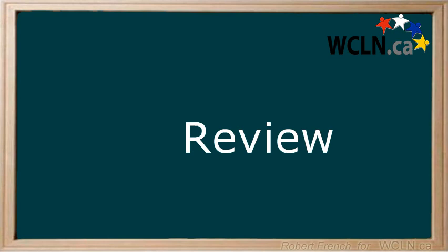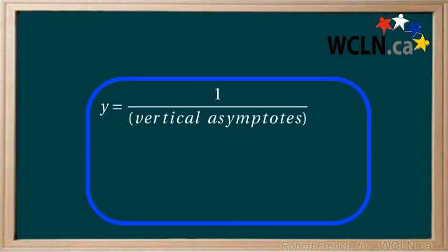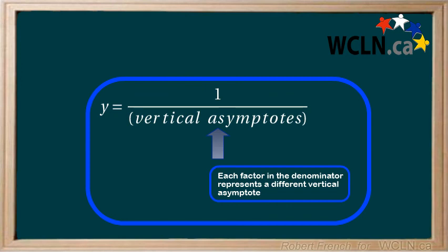In this lesson, you learned how to write a rational equation based on the location of the vertical asymptotes. You learned that the vertical asymptotes are written in the denominator as factors with each factor representing a vertical asymptote and its location.